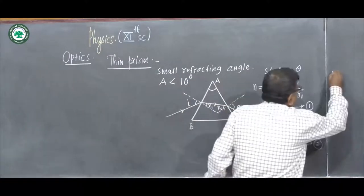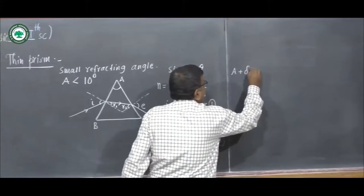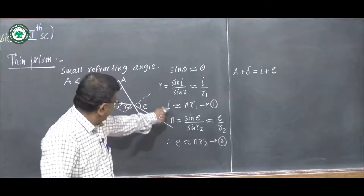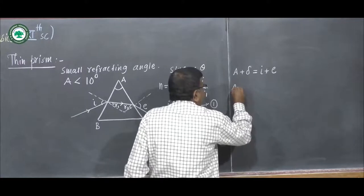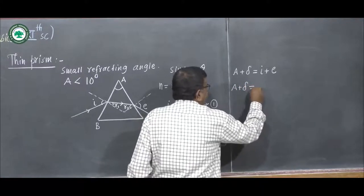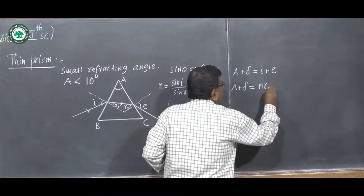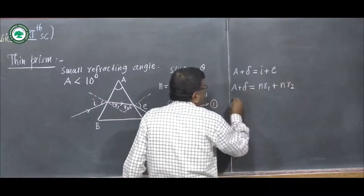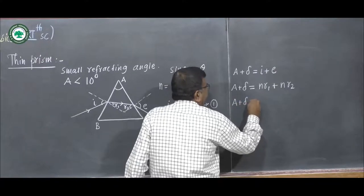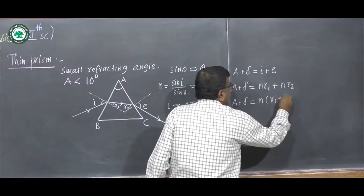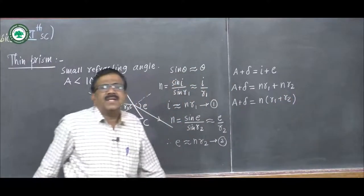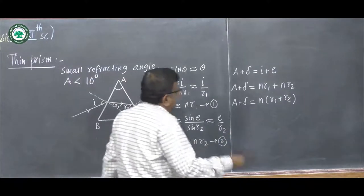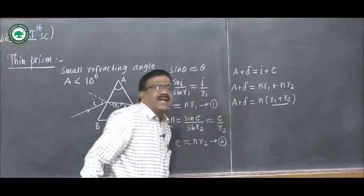We know that A + δ = i + e for the prism — we already derived this relation. Substituting the values of i and e, we write A + δ = n·r1 + n·r2. Taking n as common: A + δ = n(r1 + r2). But we also know from the previous lecture that r1 + r2 equals the refracting angle A.